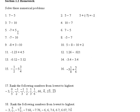Negative 7 plus 5 — signs are different, so you find the difference, you subtract: 7 minus 5 gives you 2. Take the sign of the dominant number, which is the 7, and its sign is negative, so the answer would be negative 2.